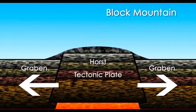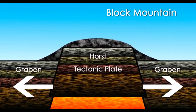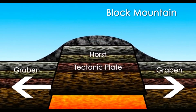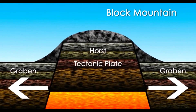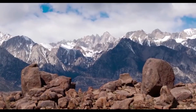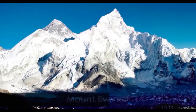Then we have what we call block mountains. These are formed due to the process of faulting, where different forces cause the plates to move in different directions. For example, we see tension forces pulling the plates in different directions, hence forming what we call a horst mountain raising up, forming a horst mountain.